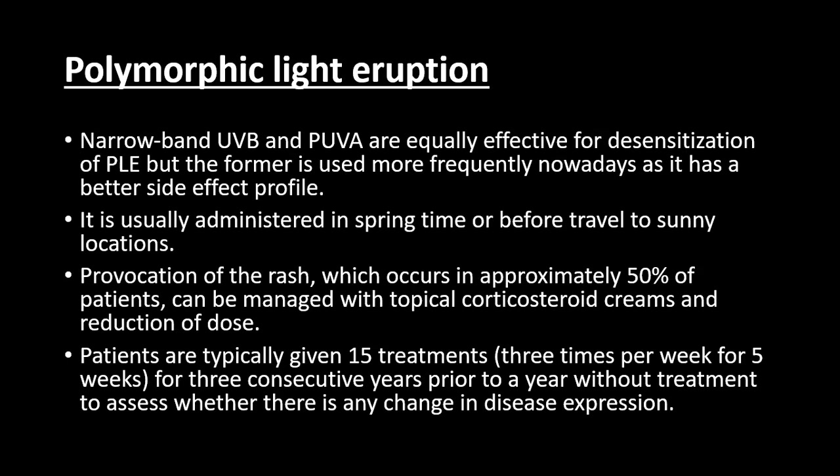Phototherapy can also be used for desensitization in patients with polymorphic light eruption. Both narrowband UVB and PUVA are used, but narrowband UVB is used more frequently nowadays due to its better safety profile. This is usually administered in springtime before summer. Provocation of rash, which occurs in approximately 50% of patients, is managed with topical corticosteroid cream and dose reduction. Patients are typically given 15 treatments — three times a week for five weeks — every spring for three consecutive years, to assess whether there is any change in disease expression.